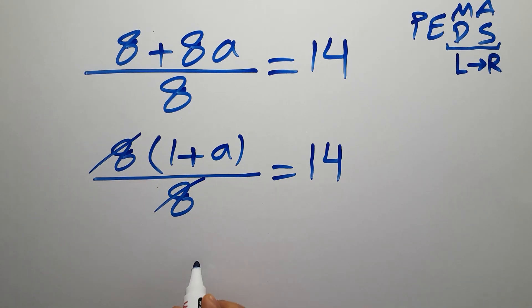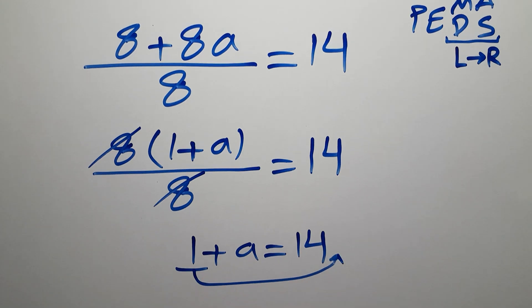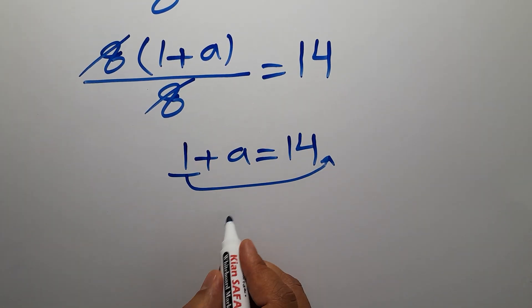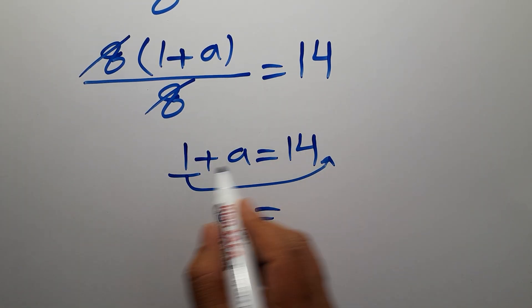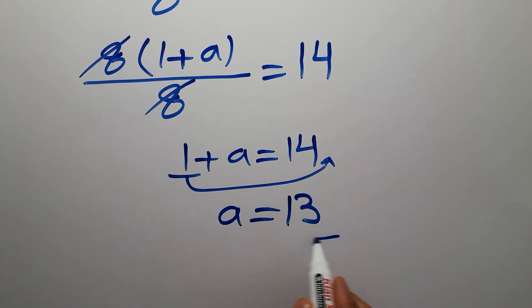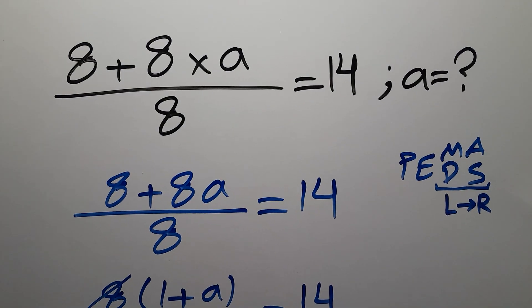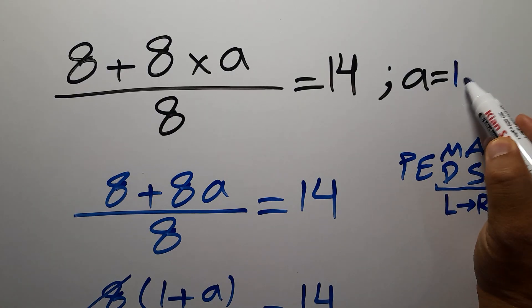So 1 plus a gives us 14. Now let's move this one to the right-hand side, and a will be equal to 14 minus 1, which equals 13. This is our final value for a. The correct answer is 13.